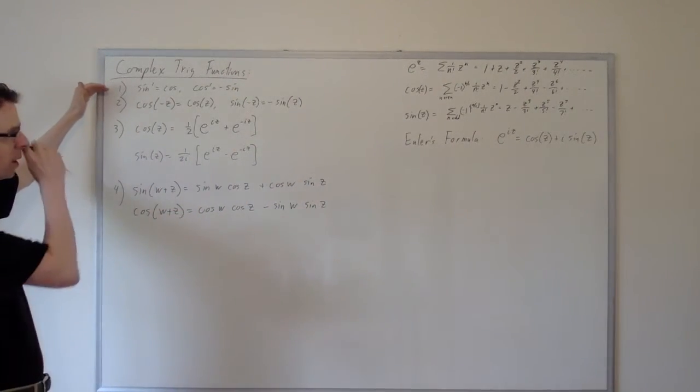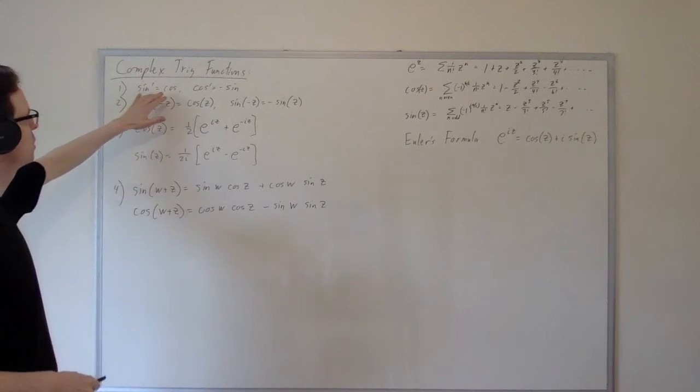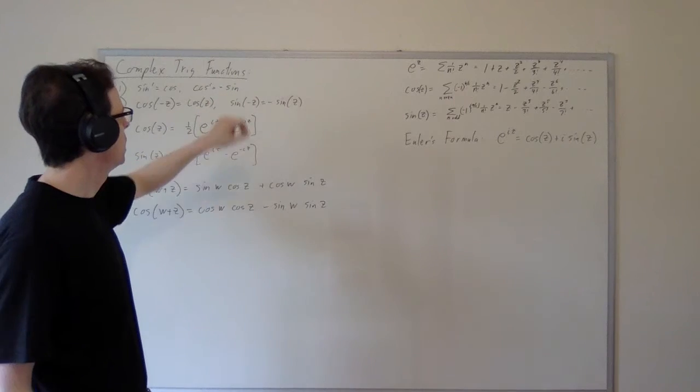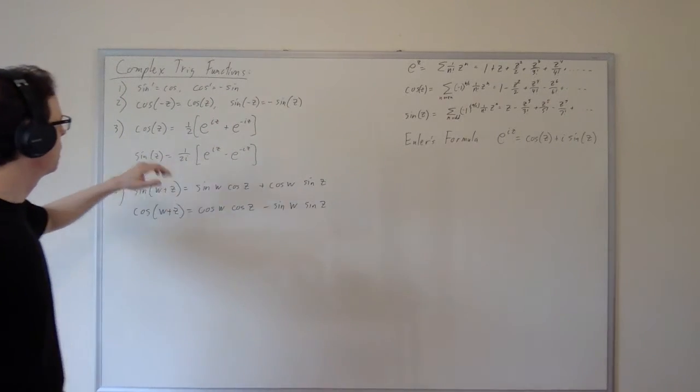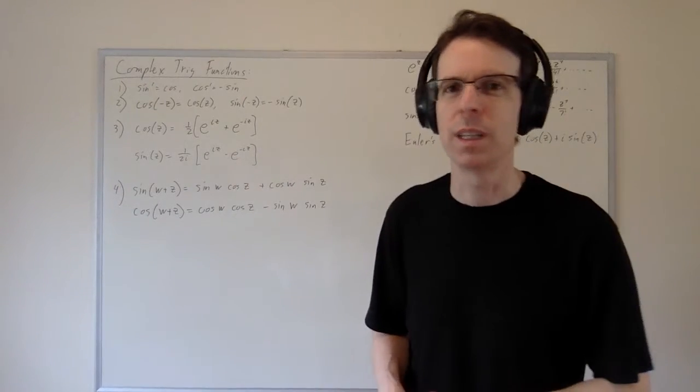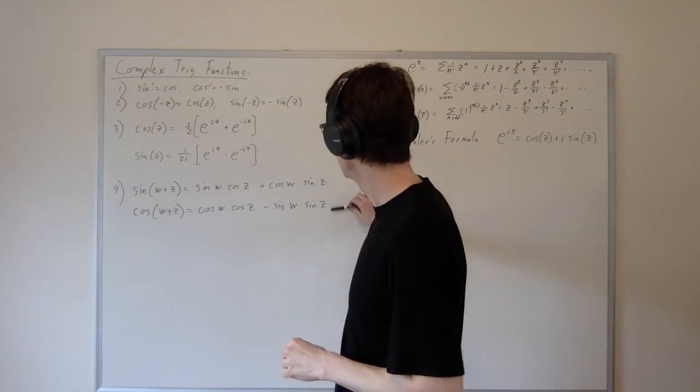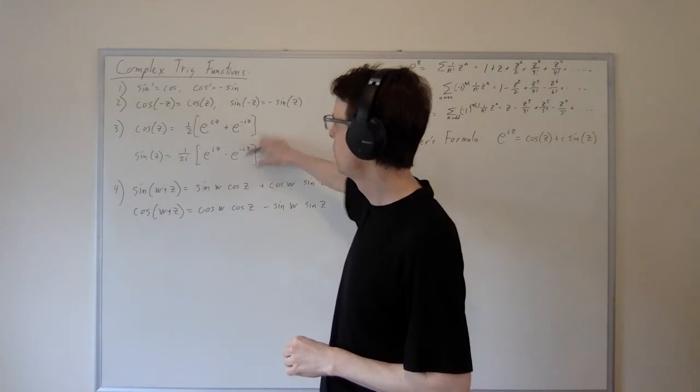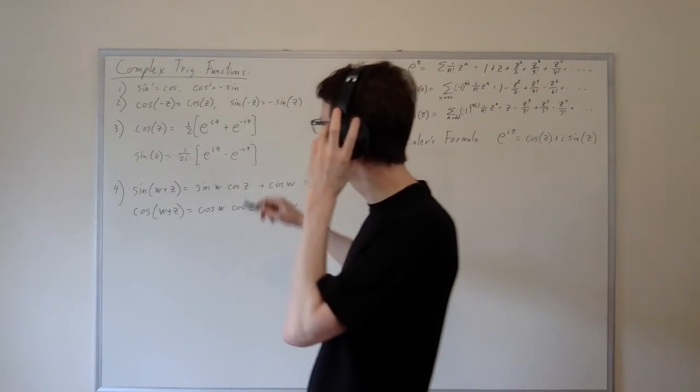We've also already proven the basic derivative interchange properties for these trig functions. The derivative of sine is cosine, the derivative of cosine is minus sine. We're going to prove some basic familiar and possibly some unfamiliar properties. These are simple generalizations of the angle sum formulas. These are probably new to you because they're inherently complex.